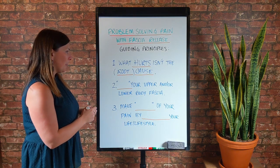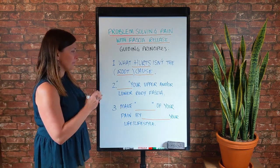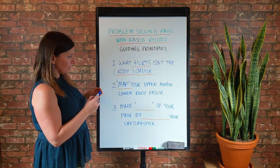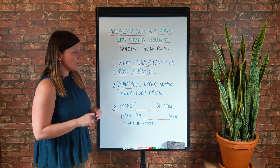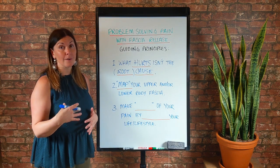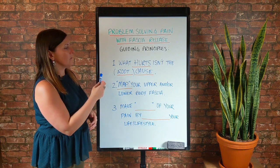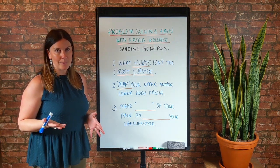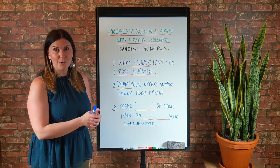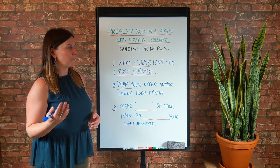Moving on to number two: you're going to want to map your upper and/or lower body fascia. You can use fascia release as a self-diagnostics tool to find the root cause of your pain. You're going to avoid what hurts. If you have joint pain, you're typically not going to be releasing fascia in the joint. If pain presents in a soft tissue area, you definitely want to avoid that.